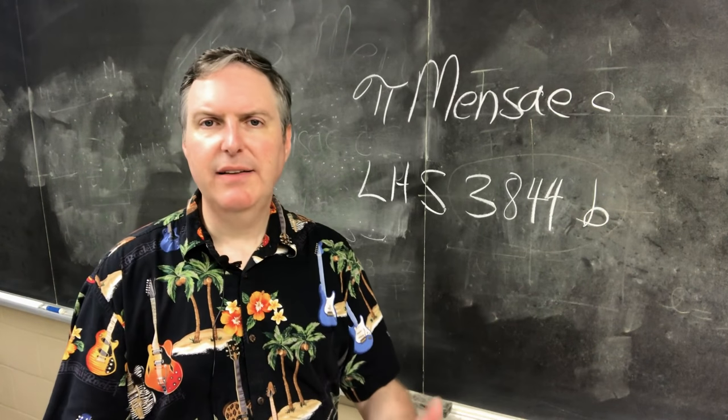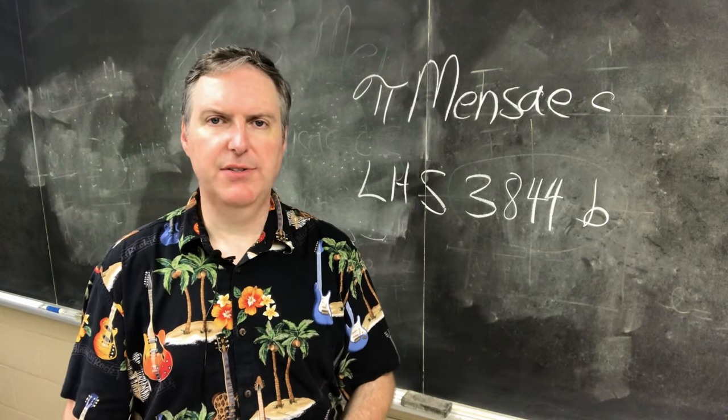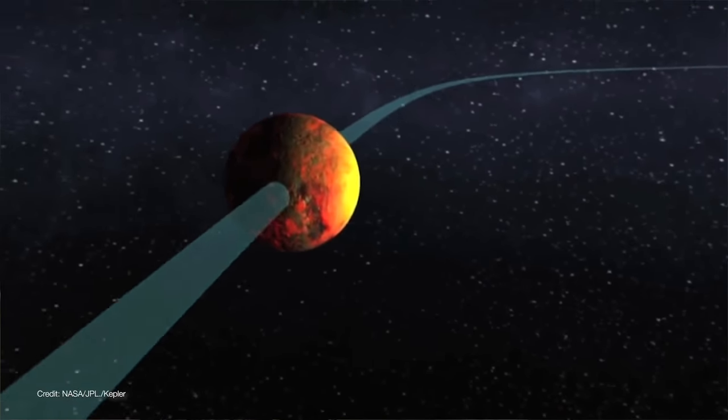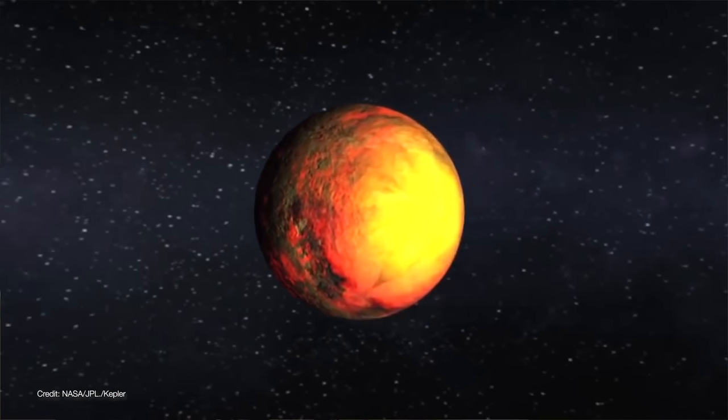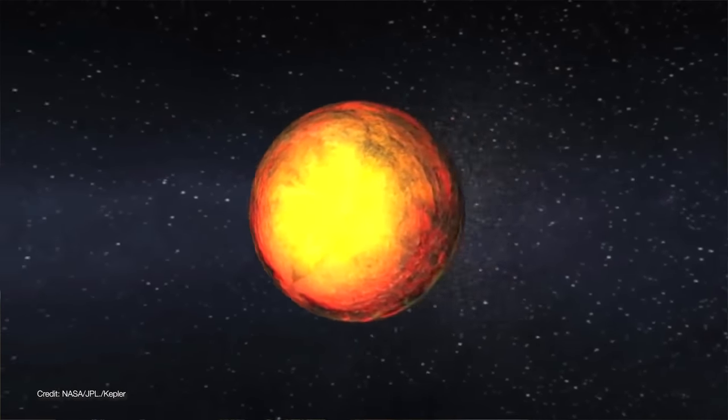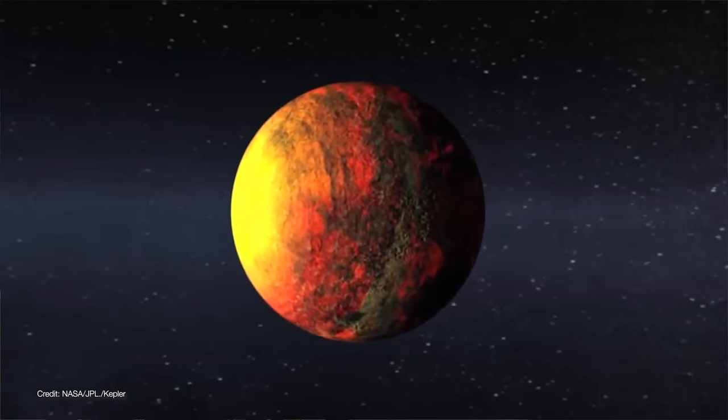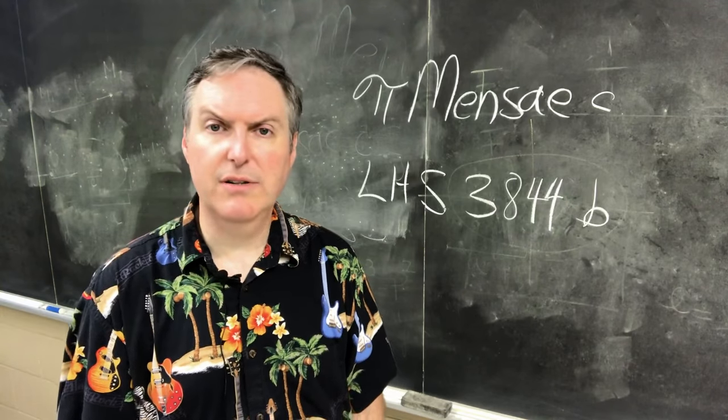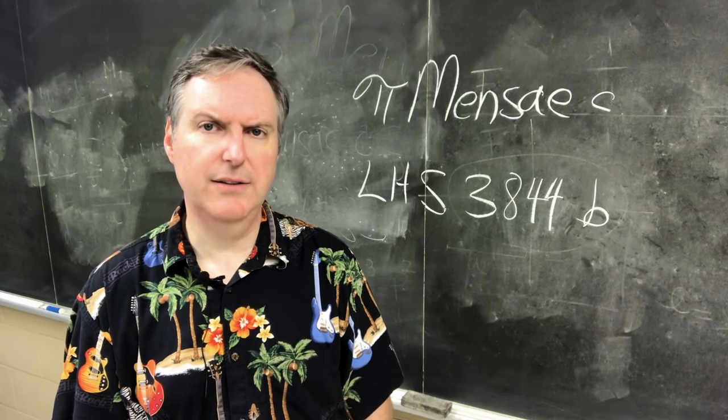It's also likely that these planets are tidally locked to their stars. That means the daytime sides of these planets are in constant daylight and are being blasted by the scorching heat of their host stars. Their far sides, on the other hand, are probably plunged into perpetual darkness. By the way, perpetual darkness was the name of my progressive metal band in college.